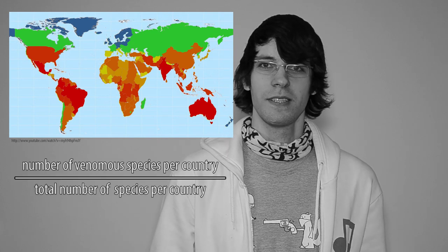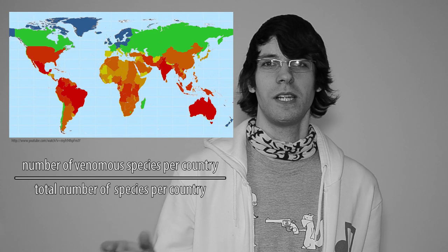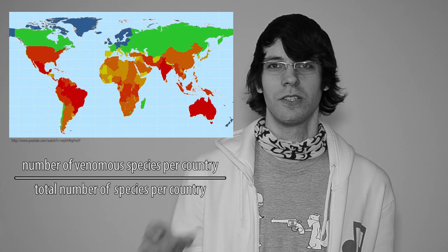However, the problem with this data is it's not normalized for the total number of species found in each country. Because the general trend from the poles to the equator, you will find more and more species, so the biodiversity is increasing. This of course is not the case for all regions, so in the desert you won't find so many animals, but it's a general trend.